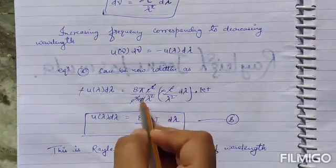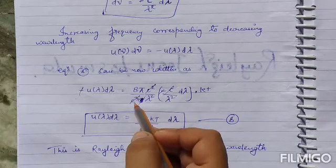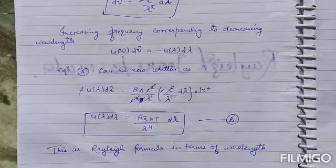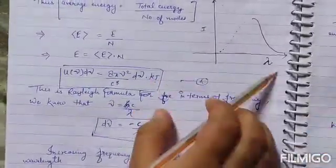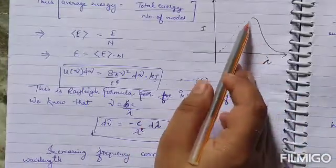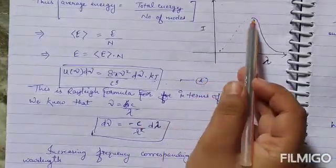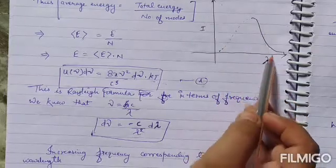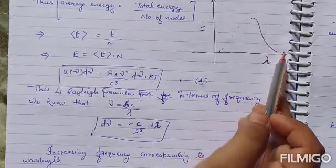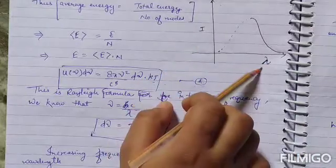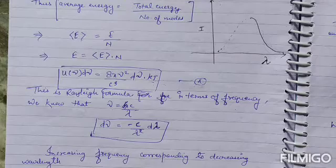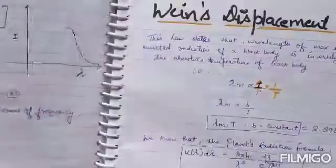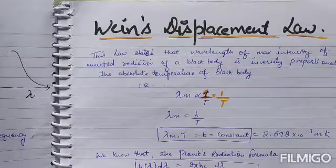In this formula, c³ cancels out. This is all about the Rayleigh formula. The curve of intensity versus lambda - this graph shows the intensity curve. We will talk about Wien's displacement law in the next video. Thank you.